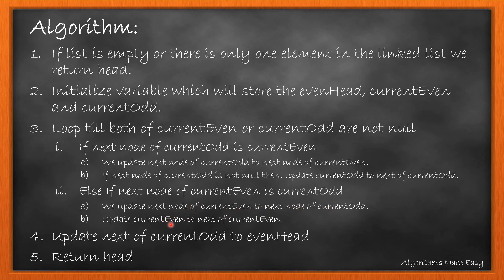Now we move currentEven to its next. After the loop is terminated, we will have two lists: one with odd numbered nodes and the other with even numbered nodes. We will join them by updating the next of currentOdd to evenHead. In the end, we will return the head.